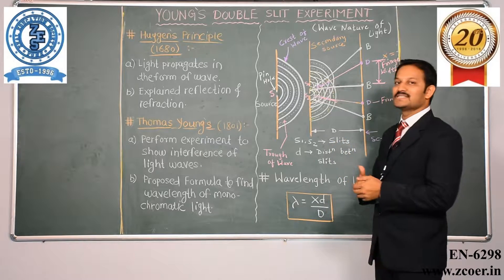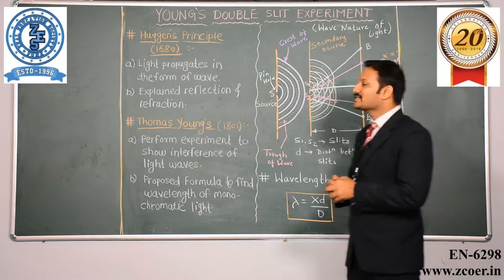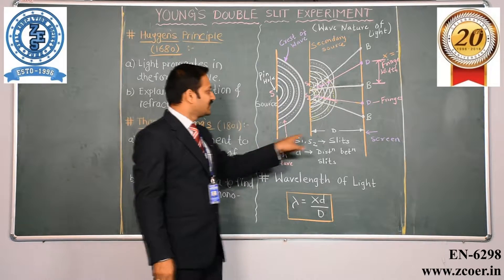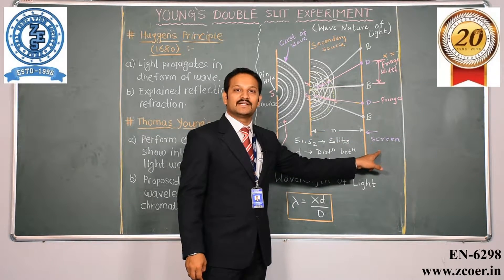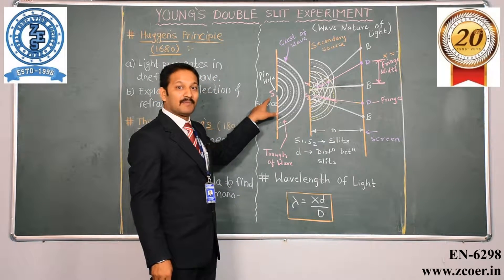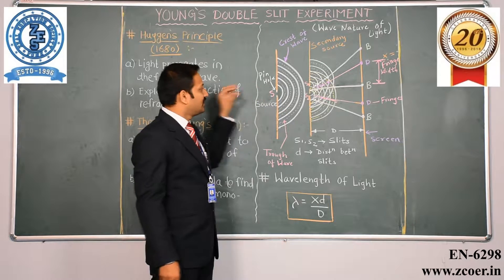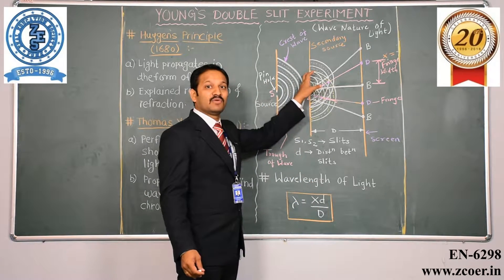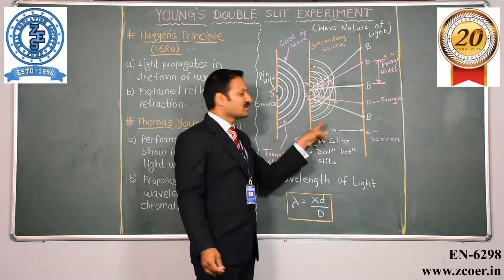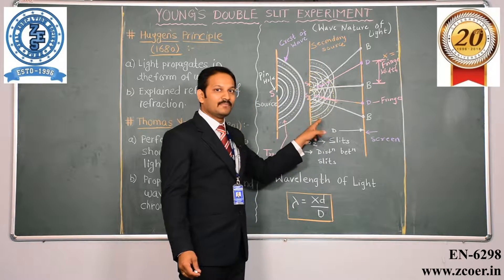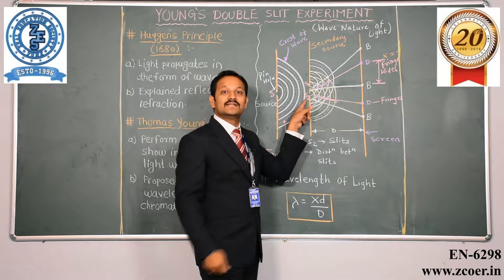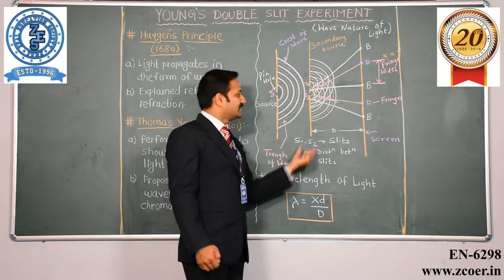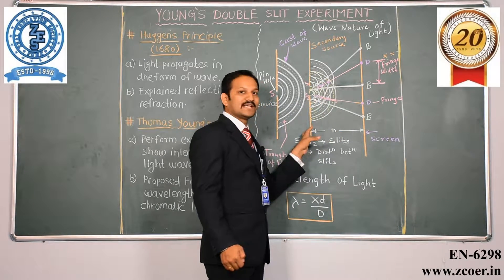Now let us go into detail of Young's double slit experiment. According to Young's double slit experiment, he has considered a particular setup. This setup includes one primary source, second is your secondary source, and to view the interference pattern he has a screen. A pinhole is arranged as the primary source so that whatever light coming from the pinhole, when it travels through this particular slit, it gets diffracted. Once it passes from the primary source, it comes across the secondary source. In the secondary screen, we have two slits S1 and S2 — these two slits are rectangular slits. The distance between these two slits S1 and S2 is given by d. Capital D is the distance between the secondary source and the screen.